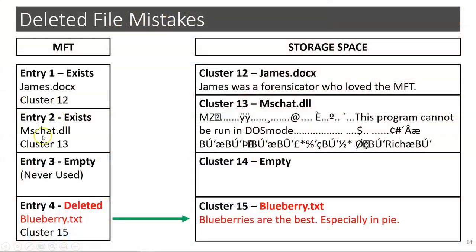This is where we left off, and let's take this one step further now that we know how the MFT maps to the storage space. We start to see where mistakes and incorrect conclusions can possibly occur. In this example, the user deleted mschat.dll. As a result, MFT record 2 gets marked as deleted, which causes at least cluster 13 to become available for new data if the computer chooses to do so.